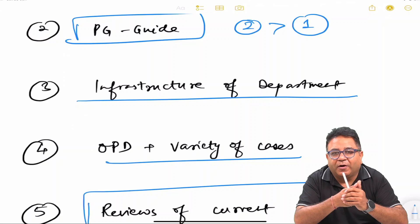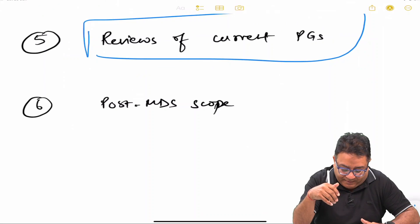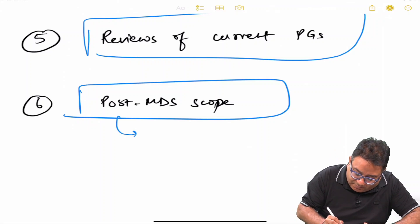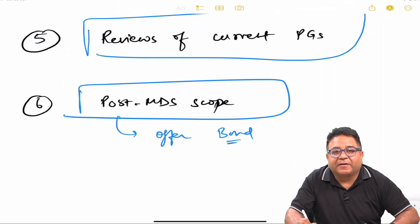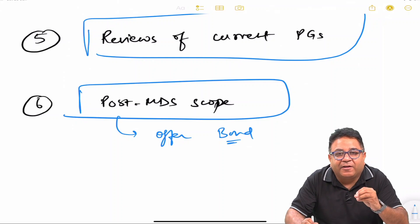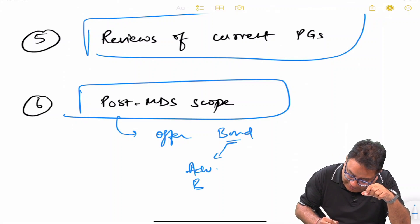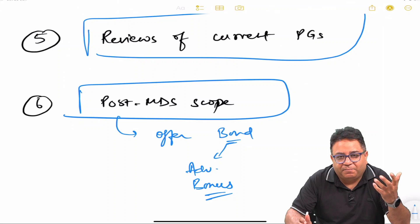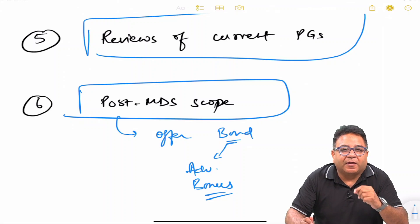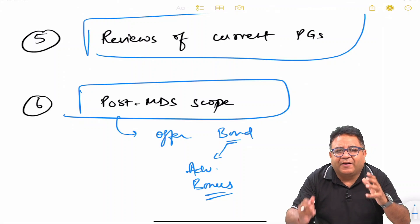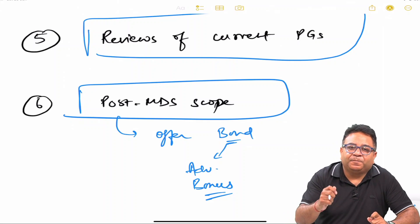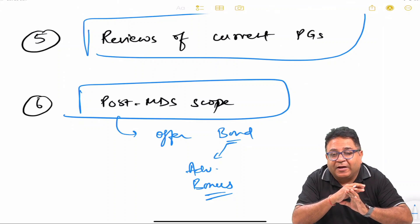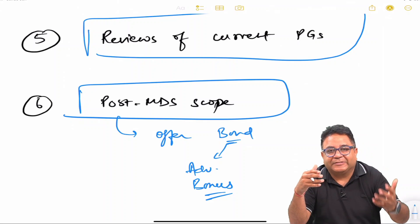Last is post-MDS scope. Why I mentioned this in relation to government and not in private is because many government colleges offer bond after completion of MDS. Don't take it as a bond, binding, or slavery—take it as an advantage, take it as a bonus. Trust me on this: when you pass out MDS, say you are doing it in a North India college, you are getting stipend of say 1 lakh plus per month. When you pass out, it's very rare you will start earning 1 lakh per month right from day one, very rare, unless you have an establishment before that. So if the college is offering you SR-ship, if the college is offering you some bond service one year, two year, it is the best thing which can happen to you, like colleges in UP, colleges in Maharashtra.